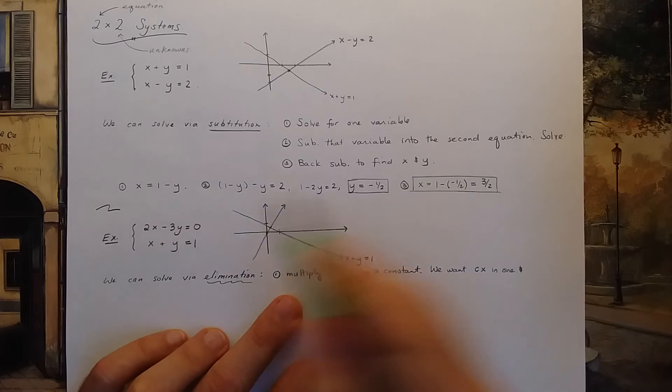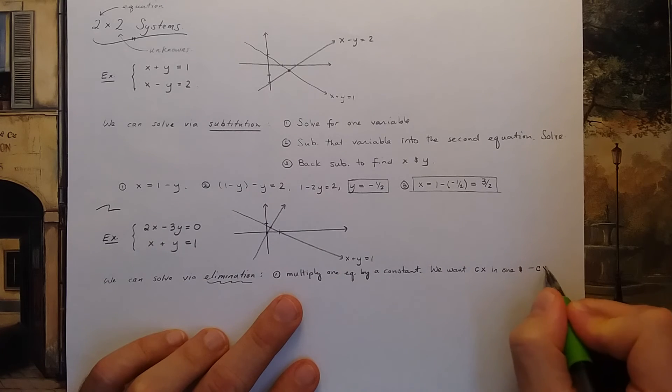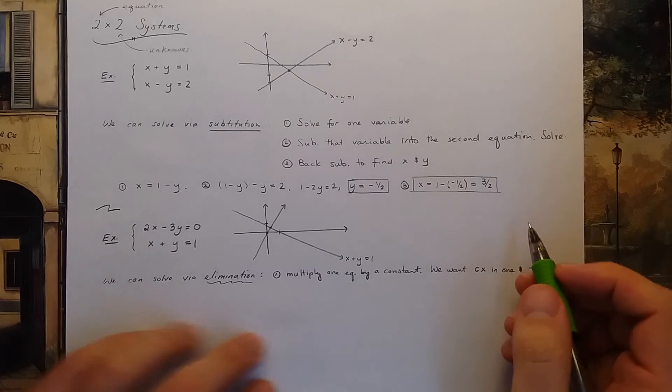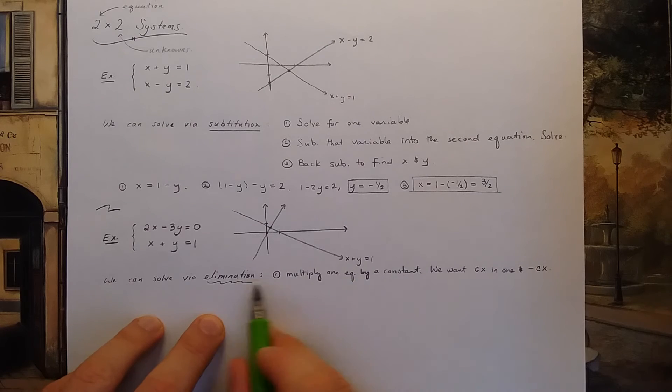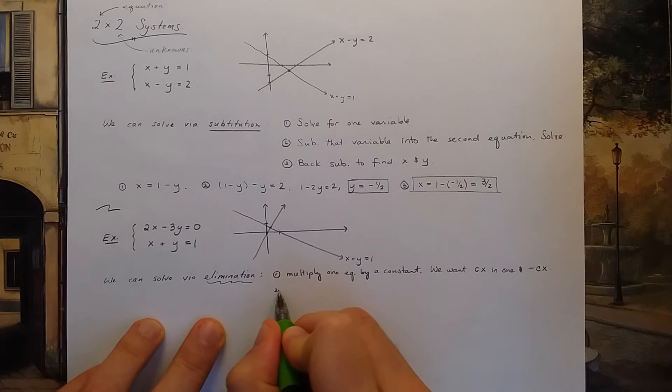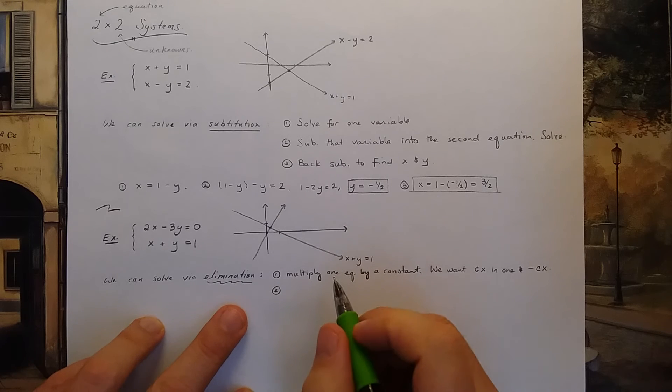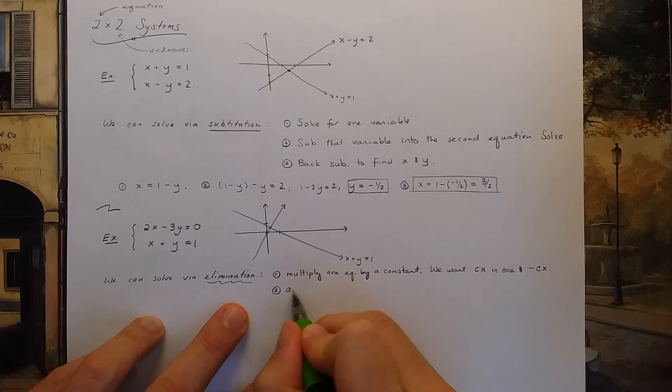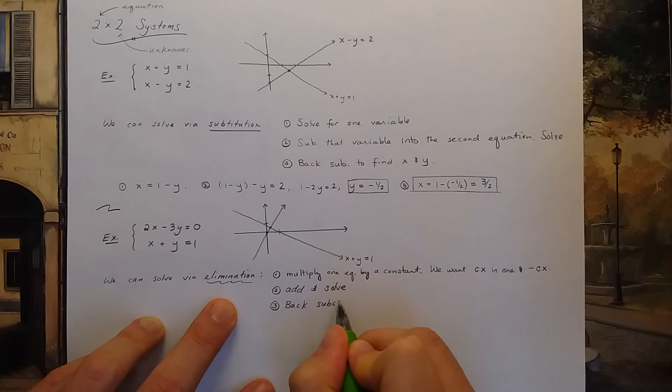And the second equation, we want negative cx. I'll show you what I mean more carefully with this first step when we follow through with the example. But before we do that, let me write down the second two steps. Now I'm going to add the two equations together and solve. And the third step is to back substitute to find both x and y.